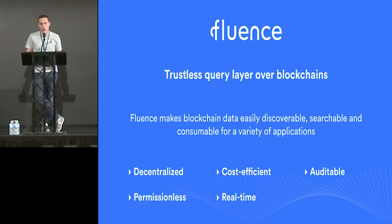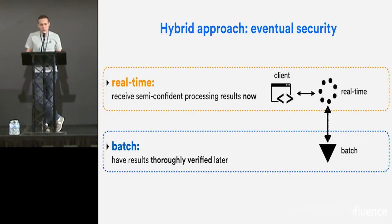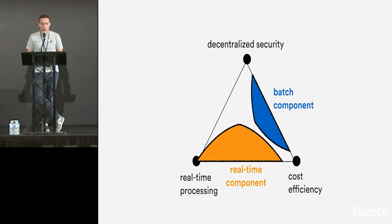Basically, what we're trying to build is a process query for blockchains. The idea is there are two major components in the system. There's a real-time component which serves you results fairly fast, within seconds. But those results are not necessarily Ethereum level of security - they might be incorrect. And there's a batch validation layer that thoroughly verifies those results later. If it finds that some of the real-time nodes were performing incorrectly, it will find those nodes and maybe even pay compensation to the client. That's how these map to the triangle. There's a real-time component which is real-time and cost efficient, and a batch component which is secure and also cost efficient. They work together.